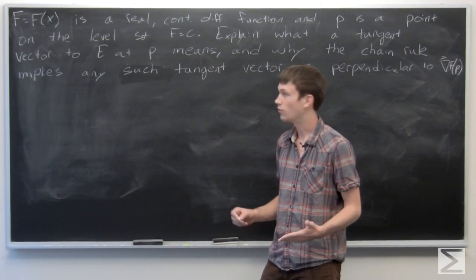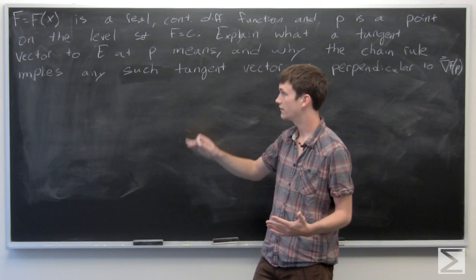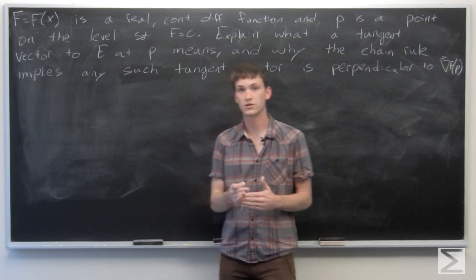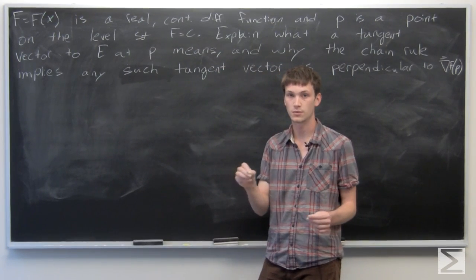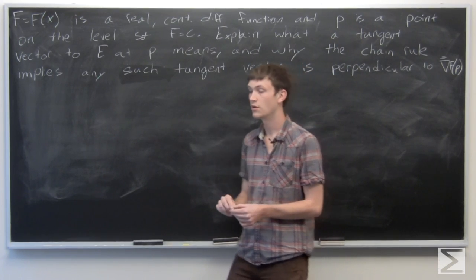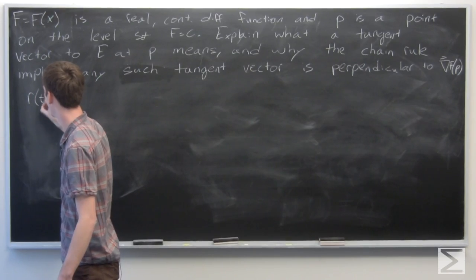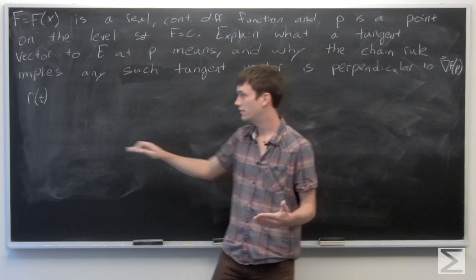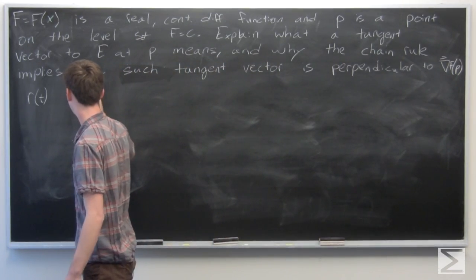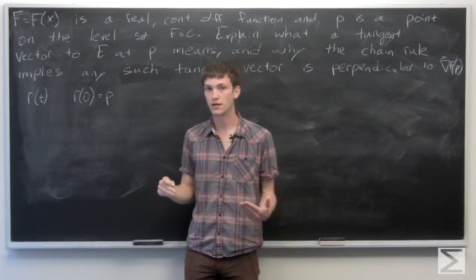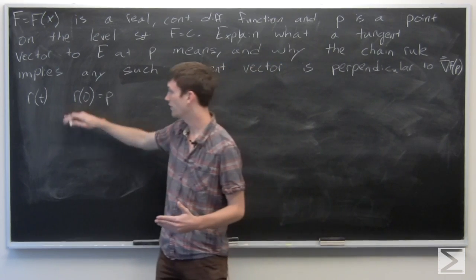To explain what a tangent vector to e at p means: it means that we have some level set e, and we have a tangent vector to it. By definition, there is some path — a continuously differentiable function within that level set — and we can call that path r of t. We know that r of 0 equals p, our given point. Our tangent vector is the derivative of r at 0, that is, r prime of 0.